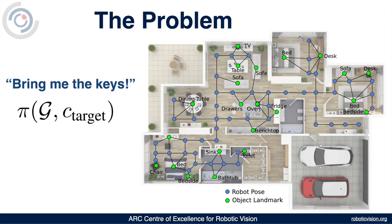We want to learn a policy that, given a graph map and a representation of a target object like the keys, outputs navigation goals that allow the robot to find the target object efficiently. Notice that the target object is going to be non-static, so it will appear in different places of the environment with different probabilities. For instance, the keys might have a high probability of appearing at the bedside table, on the kitchen benchtop, or at the dining table, but a very low or even zero probability of appearing anywhere in the bathroom. We hope that the policy can learn to exploit this underlying but hidden and unknown probabilistic model.